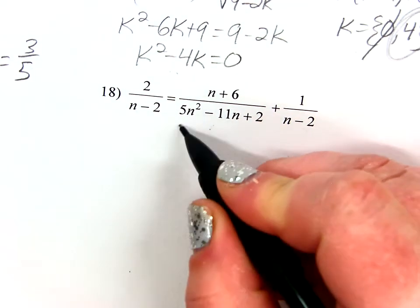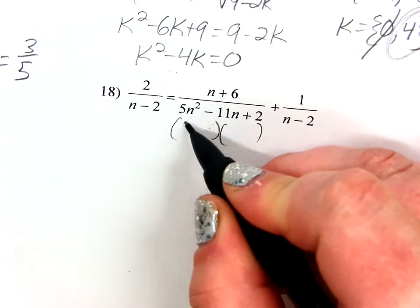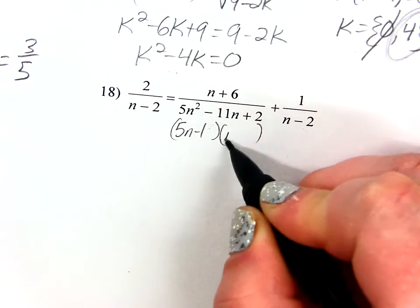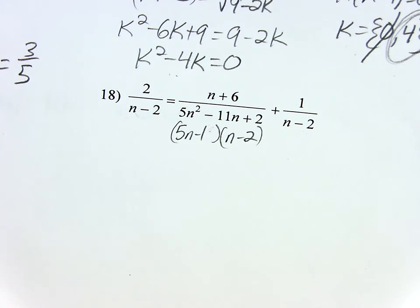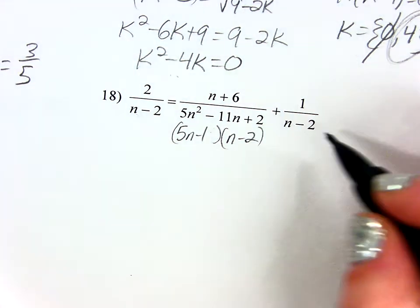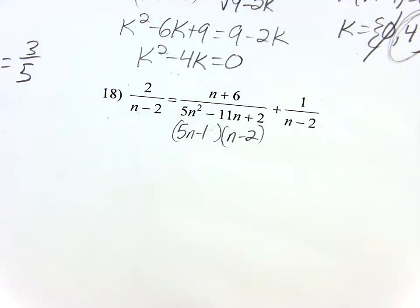Does anybody have it factored already? Is it n minus 2? 5n minus 1. All right. So now I can pretty easily get those common denominators if I just multiply these guys by 5n minus 1 over 5n minus 1. Or you can multiply everybody by 5n minus 1 times n minus 2. Same thing.